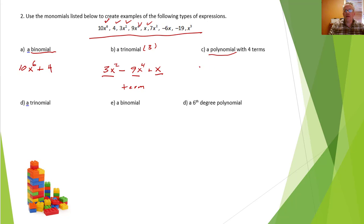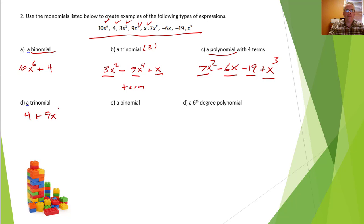For a polynomial with four terms: 7x squared minus 6x minus 19 plus x cubed. For a trinomial, I'll pick three terms: 4 plus 9x to the fourth plus x cubed. For a binomial I just need two: negative 19 plus 3x squared — that has two monomials added together, so it's a binomial.